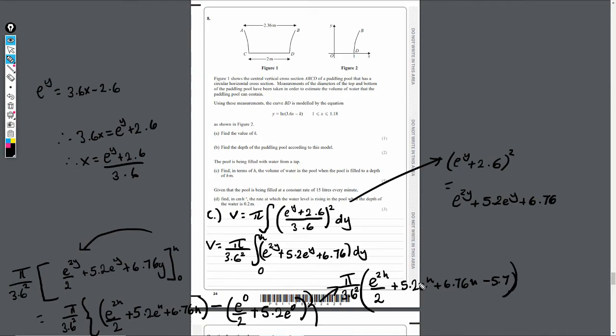And there we have it. That is the volume here of water in the pool when the pool is filled to a depth of h meters. So quite a tricky question there. But the most important thing is recognizing that we're about the y-axis when we're rotating it. That's part C done.